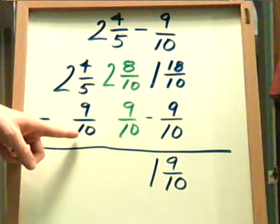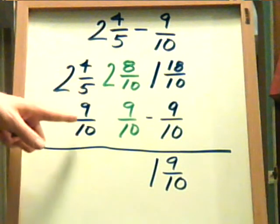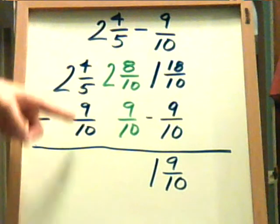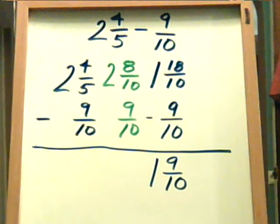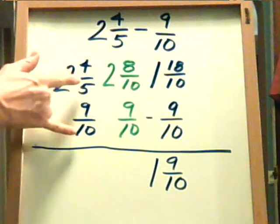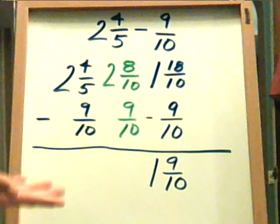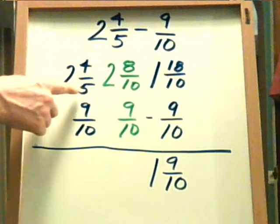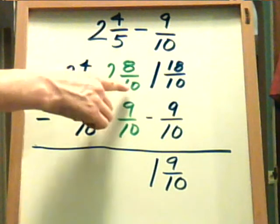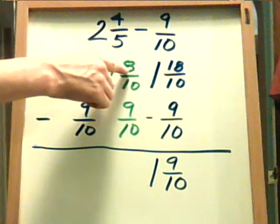So the first thing we have to do is find the common denominator. The common denominator of 5 and 10 is 10. That just means that it can't be smaller than either of these. It can be one of these. 5 times 2 gives you 10. So that's your common denominator. 5 times 2 gives you 10, so 4 times 2 gives you 8.